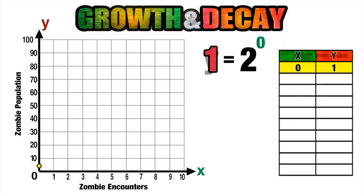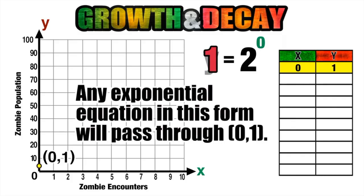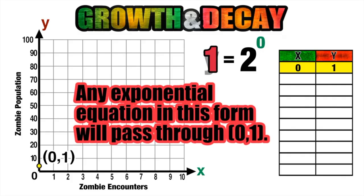So before there are any zombie encounters, we always start with our first infected person. And we should also realize that any exponential equation in this form is going to pass through that point zero one, because anything raised to the zero power is always one.